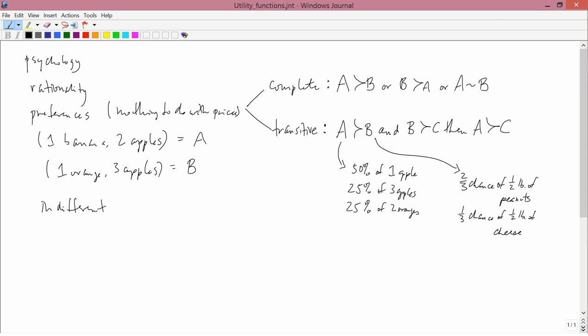If we assume that consumer preferences are complete and are transitive, then we can represent consumer preferences with a mathematical function. It's called a utility function.